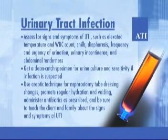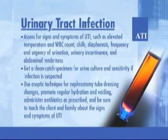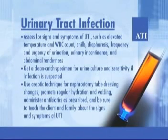For urinary tract infection, assess for signs and symptoms of UTI such as elevated temperature and WBC count, chills, diaphoresis, frequency and urgency of urination, urinary incontinence, and abdominal tenderness. Get a clean catch specimen for urine culture and sensitivity if infection is suspected. Use aseptic technique for nephrostomy tube dressing changes, promote regular hydration and voiding, administer antibiotics as prescribed, and teach the client and family about the signs and symptoms of UTI.